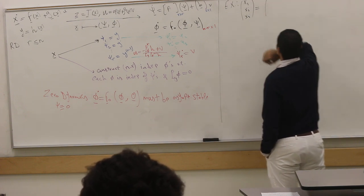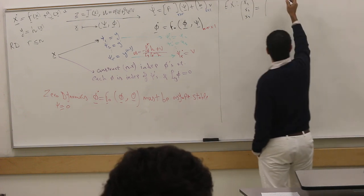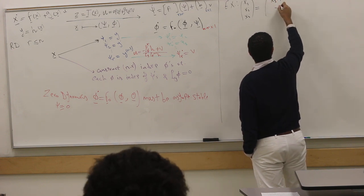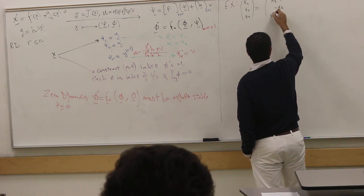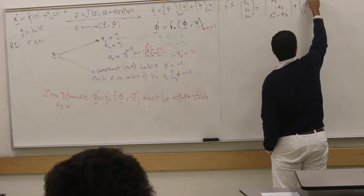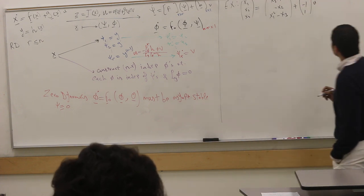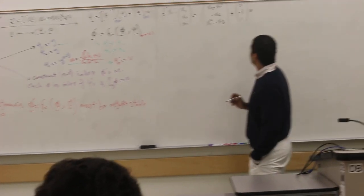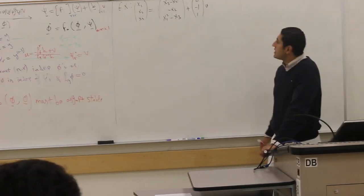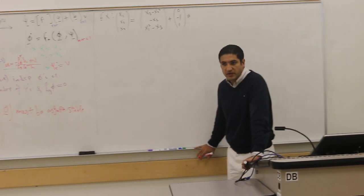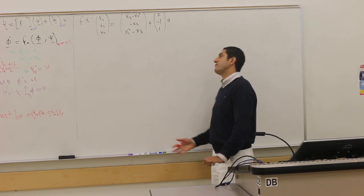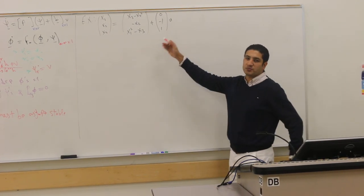We have here, say, x₃ minus x₂³ negative x₂, and x₁² minus x₃. This is your f, your g, like this. The output is typically dictated upon you. The output is the thing that you can measure. But if you have freedom, let's try to define what is a good output here.